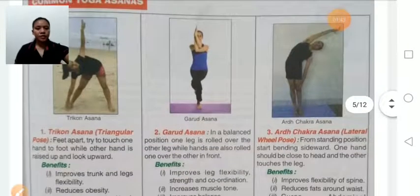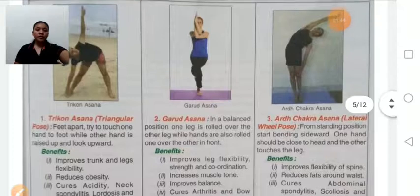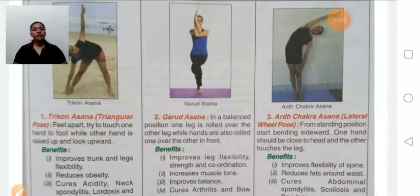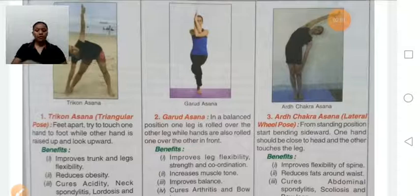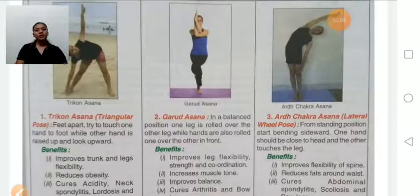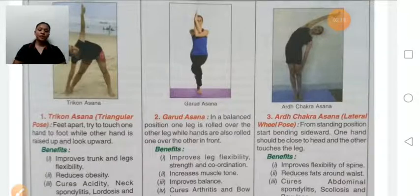Trikonasana, also known as the triangular pose. In this, we try to touch one hand to the foot while the other hand is raised up, looking upward. Trikonasana helps to improve trunk and leg flexibility, reduce obesity, and cure acidity, neck spondylitis, lordosis, and scoliosis problems. Persons suffering from severe spinal pain should avoid this asana.